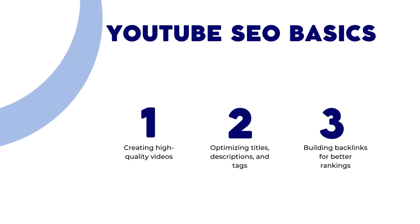One important aspect of SEO for YouTube is creating high-quality videos that are likely to rank well. You should focus on creating videos that are informative, engaging, and well-produced. You should also optimize your videos for the keywords that you want to target, so that they are more likely to rank well in YouTube's search results. Another important aspect is building backlinks to your YouTube channel, which are links from other websites or channels that point to your content and can help increase your visibility and credibility.